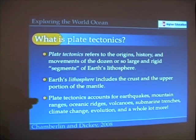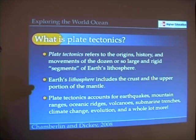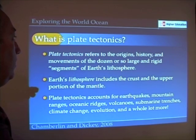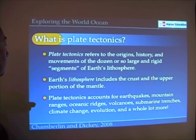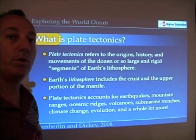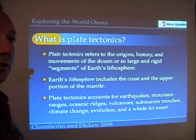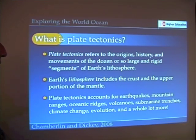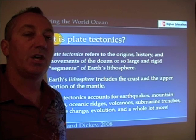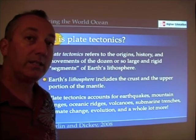Technically, plate tectonics — or the theory itself — refers to the origins, history, and movements of the dozen or so large and rigid tectonic plates of Earth's lithosphere, or really just Earth's crust. It's the idea that Earth's crust is divided into a dozen or so large jigsaw puzzle-like pieces that move about on the face of our Earth. Earth's lithosphere actually includes the crust and part of the upper portion of the mantle. Plate tectonics accounts for earthquakes, mountain ranges, oceanic ridges, volcanoes, submarine trenches, climate change, evolution, and a whole lot more. Plate tectonics explains a lot.